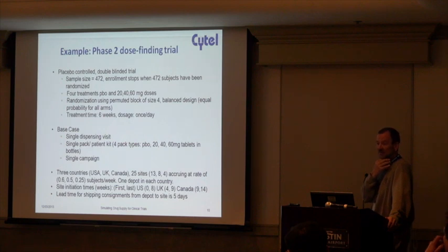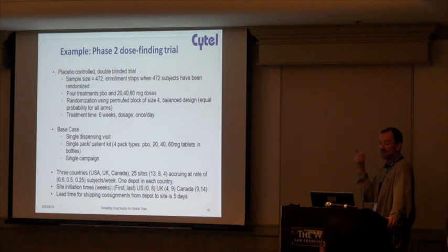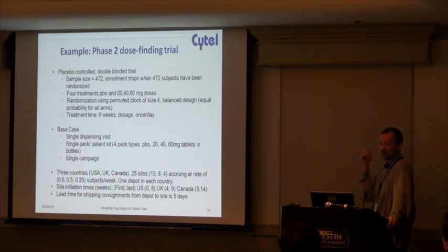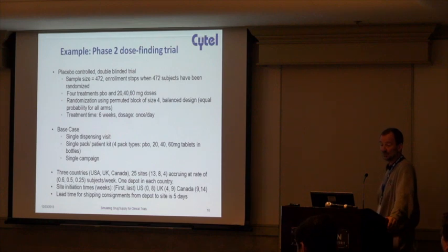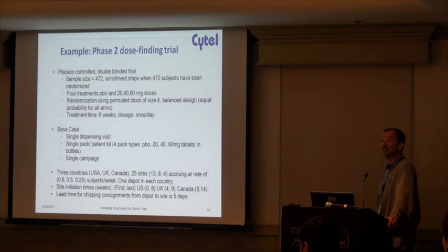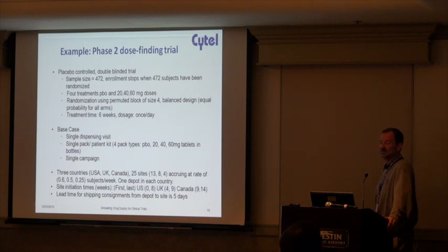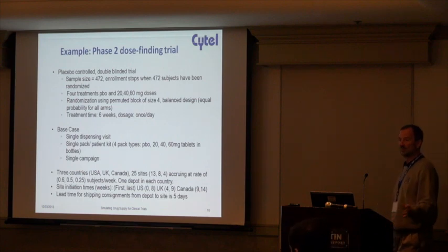Consider a placebo-controlled trial with four treatment groups — three doses and placebo — and nearly 500 patients. We do the usual kind of permuted block randomization and treat patients for six weeks with a once-a-day dose. The base case is to give out all the drug at the baseline visit with a single pack for each dosage: a 20 milligram tablet, a 40 milligram tablet, a 60 milligram tablet, and associated placebos — all manufactured at once.